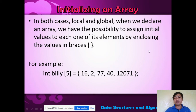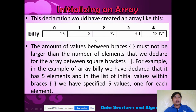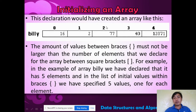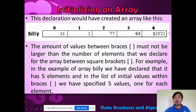This declaration would have created an array like this: at index 0 is 16, at index 1 is 2, index 2 is 77, index 3 is 40, and index 4 is 2071. The amount of values between braces must not be larger than the number specified — if it's 5, then only 5 values.